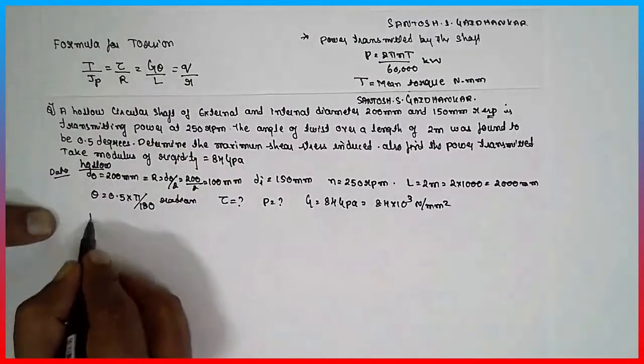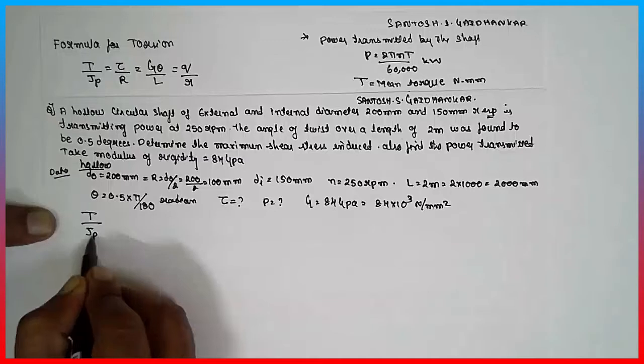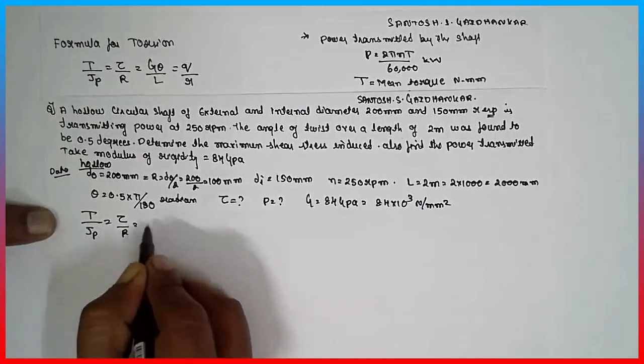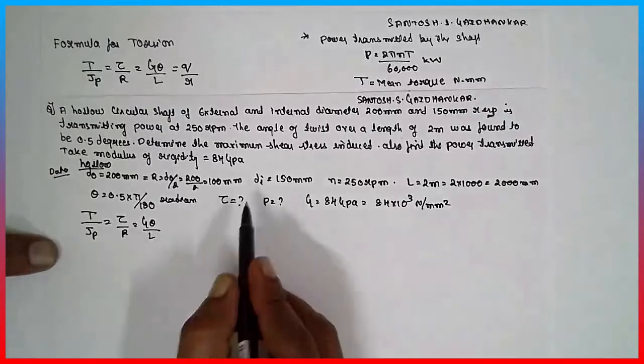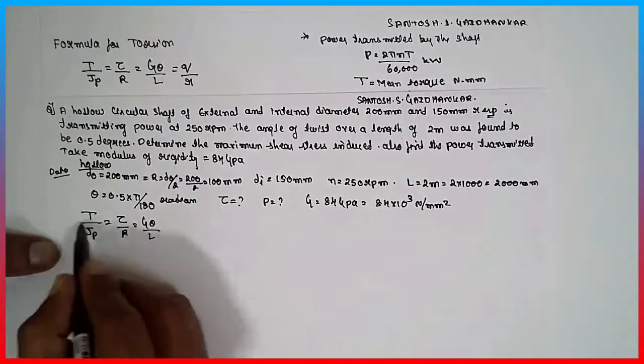Use this formula: T divided by J equals tau divided by R equals G theta divided by L. First, you have to find out the tau value. I will use the combination of these two.